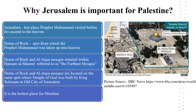Why is Jerusalem important for Palestine? According to the Quran, Jerusalem was the last place the Prophet Muhammad visited before he ascended to heaven and talked to God in the 7th century. Muslims believe the Dome of the Rock is the spot from where the Prophet Muhammad was taken up into heaven for an encounter with God. The Dome of the Rock and Al-Aqsa Mosque are situated within Haram al-Sharif, referred to as the furthest mosque. The Dome of the Rock and Al-Aqsa Mosque are located on the same spot where the Temple of God was built by King Solomon in the old city of Jerusalem. Jerusalem is considered to be the holiest place for Muslims.